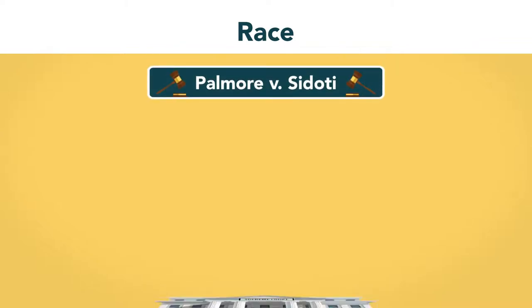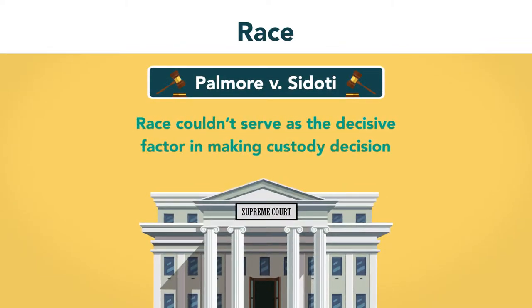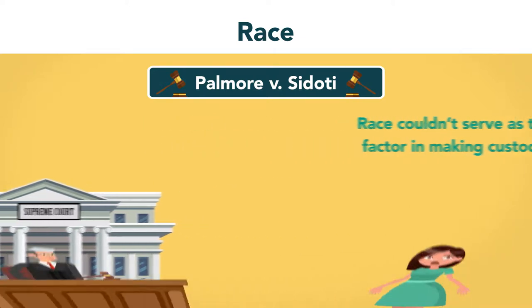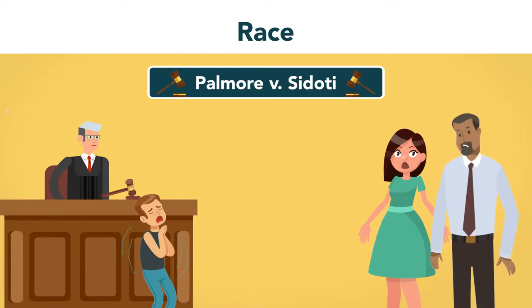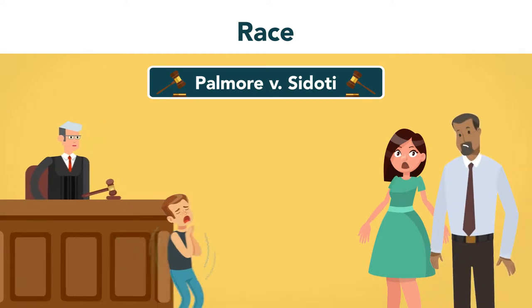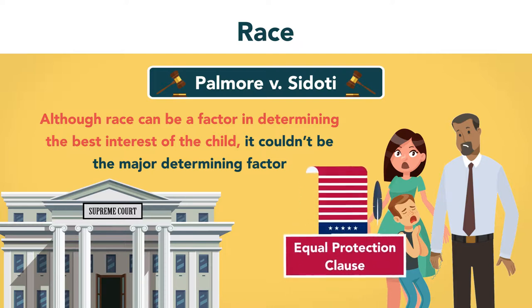In Palmore v. Sitodi, the Supreme Court concluded that race cannot serve as the decisive factor in making custody decisions. A court had taken away custody from a mother because she married an African-American man. The court found that although race can be a factor in determining the best interests of the child, it cannot be the major determining factor, as that would be a violation of the Equal Protection Clause.